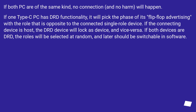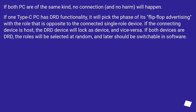If one Type-C PC has DRD functionality, it will pick the phase of its flip-flop advertising with the role that is opposite to the connected single-role device. If the connecting device is a host, the DRD device will lock as a device, and vice versa. If both devices are DRD, the roles will be selected at random and later should be switchable in software.